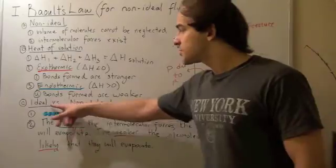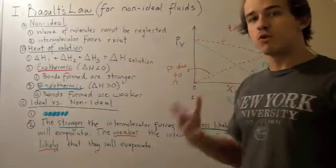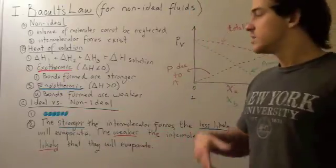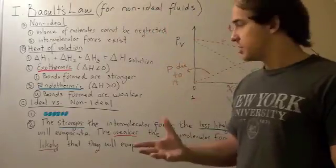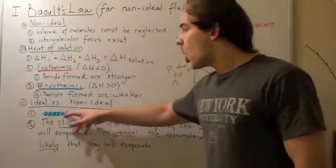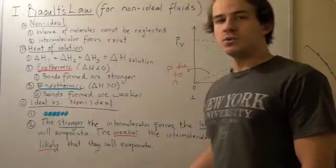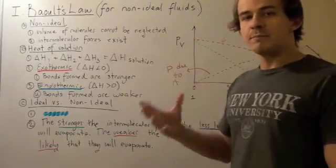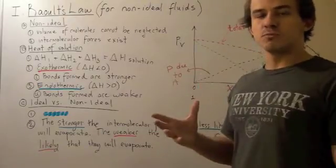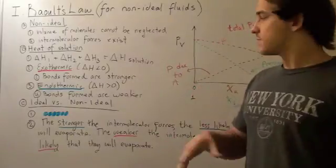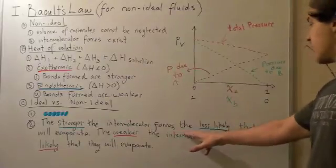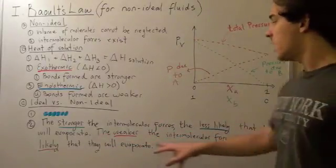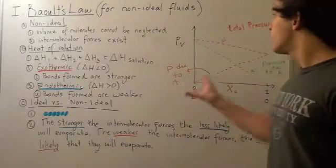In an ideal fluid, the surface molecules are not connected by any intermolecular forces — we're neglecting those forces. So nothing holds the molecules together, and they can freely escape into the environment if they have the kinetic energy. However, in a non-ideal fluid, there are intermolecular forces that hold the molecules together and inhibit them from escaping into the environment. At any given time, fewer molecules will be able to escape in a non-ideal fluid than in an ideal fluid. Because there are fewer molecules present in the space above, the pressure will be less. Therefore, the stronger the intermolecular forces, the less likely the molecules will evaporate. Likewise, the weaker the intermolecular forces, the more likely they will evaporate.